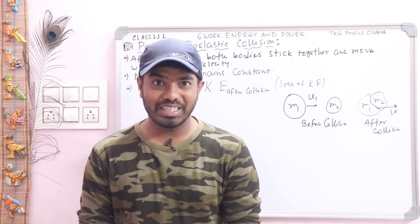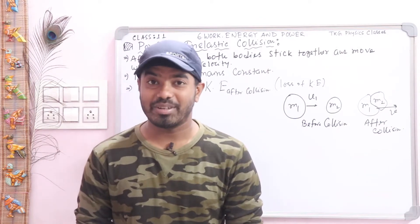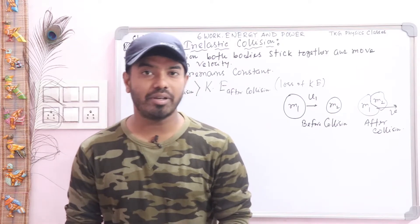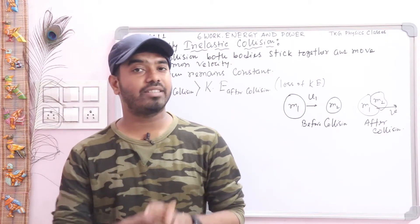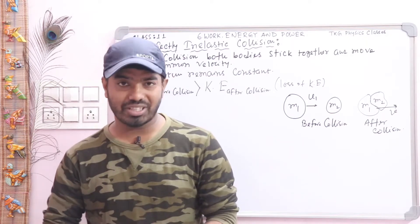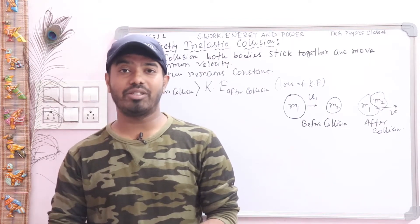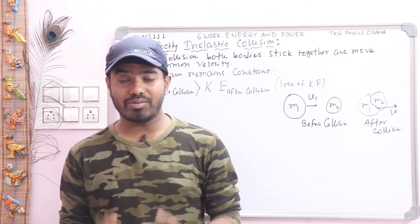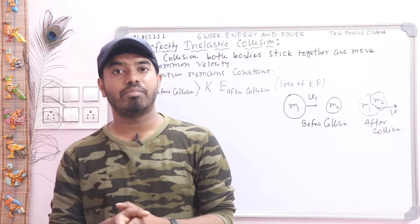Hello students. We are in the last part of the Work, Energy, and Power chapter, and this is our last lecture related to the collision portion. In this lecture we will discuss perfectly inelastic collision. In the first lecture we completed elastic collision in one dimension, in the second lecture we completed inelastic collision in two dimensions and learned about the coefficient of restitution and its values for different types of collision.